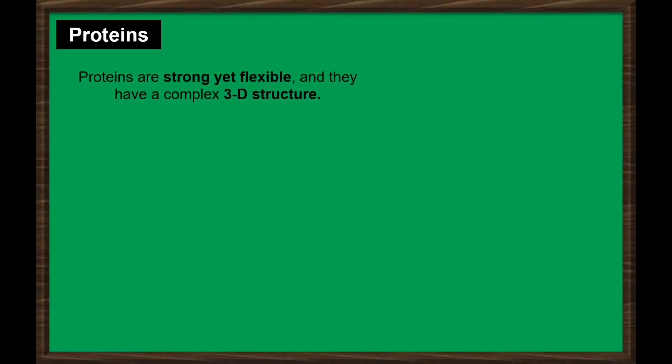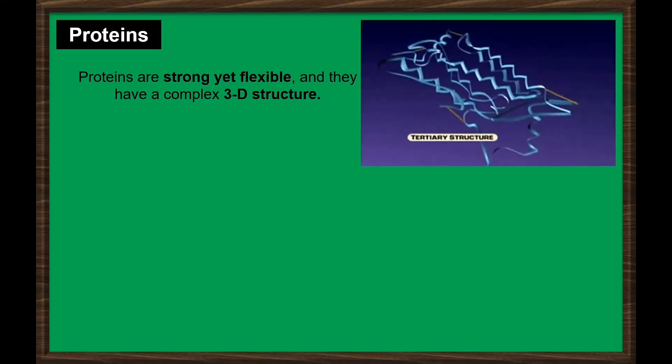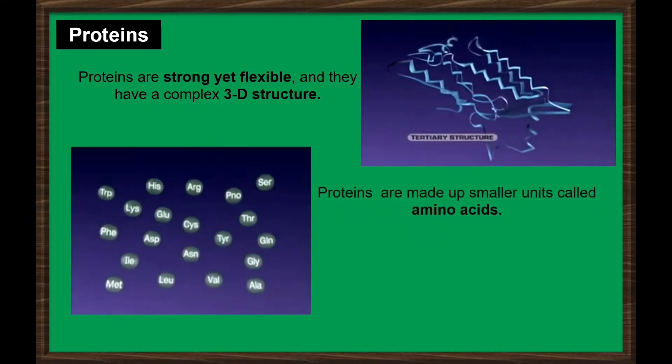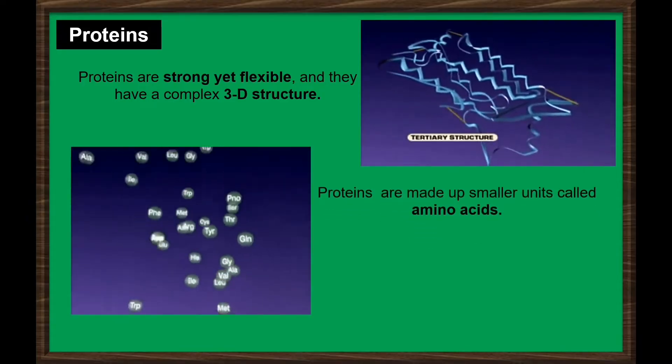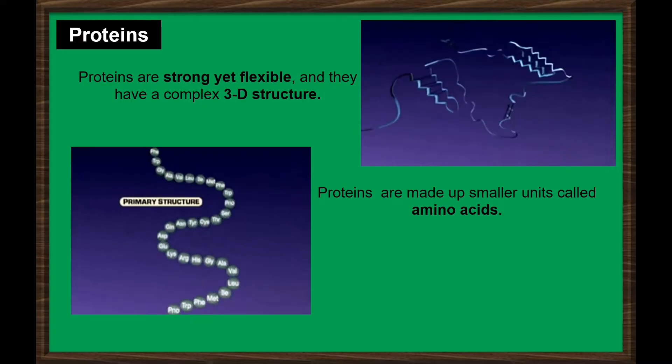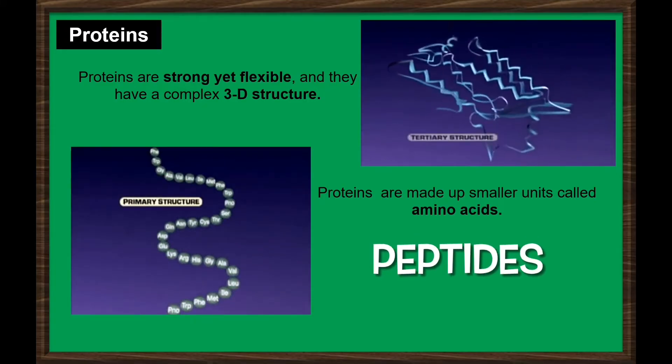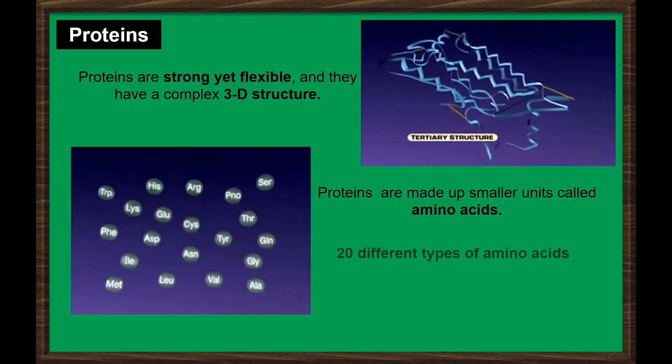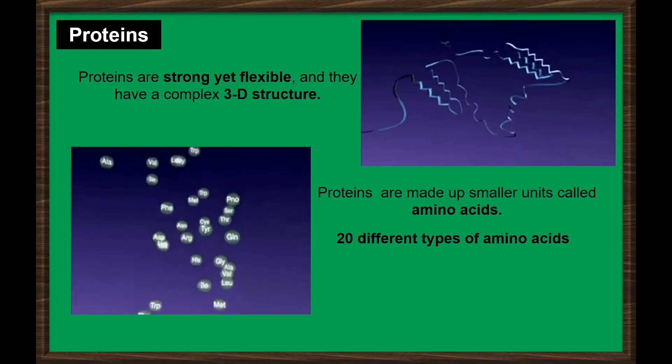Proteins are strong yet flexible and they have a complex 3D structure. Proteins are made up of hundreds or thousands of smaller units called amino acids, which are attached to one another in long chains. Chains of amino acids are called peptides. There are 20 different types of amino acids that can be combined to make a protein.